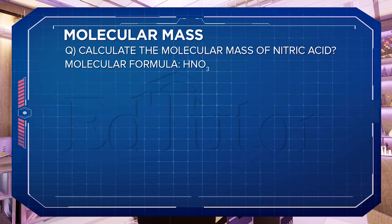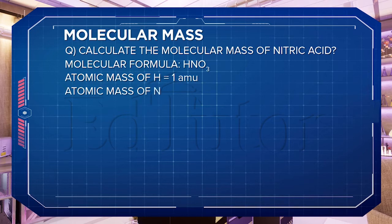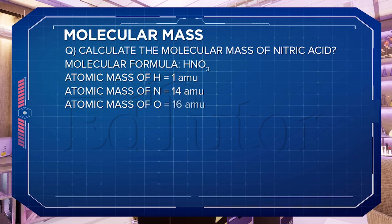There is one atom of hydrogen, so the atomic mass of hydrogen is equal to 1 amu, followed by the atomic mass of nitrogen, which is equal to 14 amu. And the atomic mass of oxygen is 16 amu. Look at the molecular formula of nitric acid again — it is HNO₃.